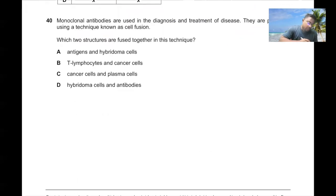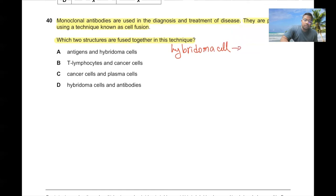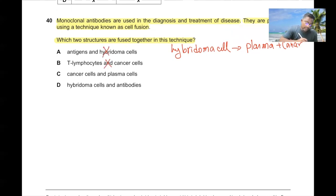Question number forty. Monoclonal antibodies are used in the diagnosis and treatment of diseases. They are produced using cell fusion to make a hybridoma cell. A plasma cell and a cancer cell are fused together. Antigens and hybridomas — no. T-lymphocytes and cancer cells — no. Cancer cells and plasma cells — yes. 40C is the correct answer.